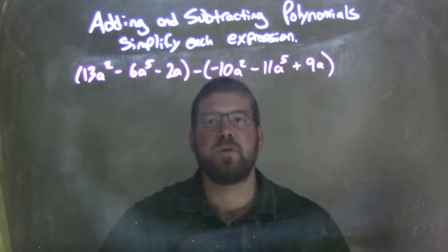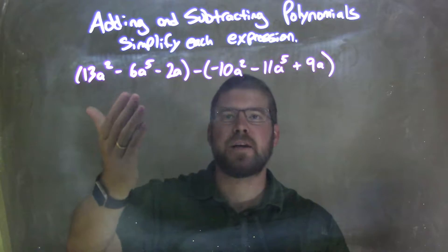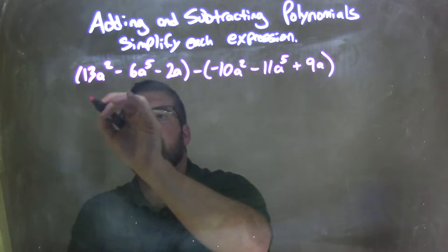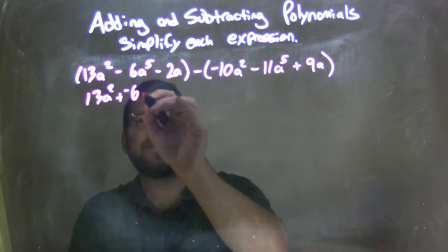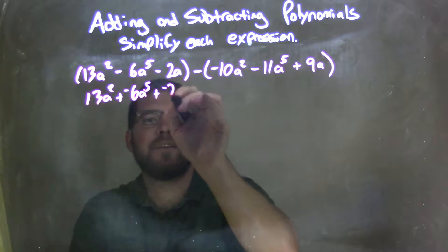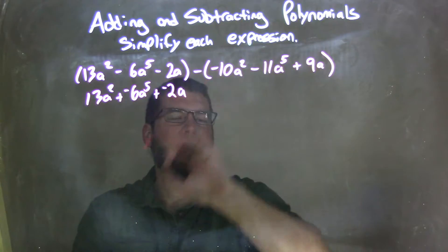Well, what I like to do is make all my subtractions so we're adding a negative. So here, 13a squared, adding a negative 6a to the 5th, adding a negative 2a. Then I'm also going to distribute that negative sign across.